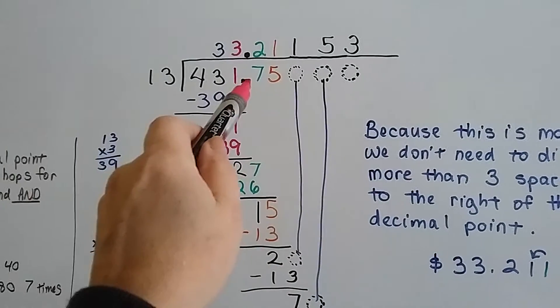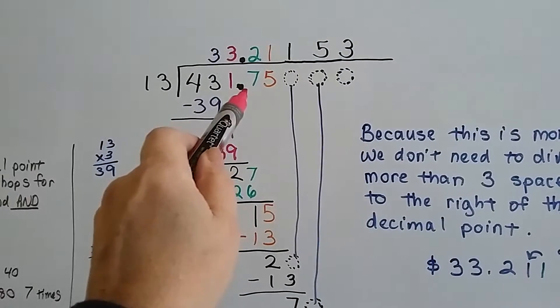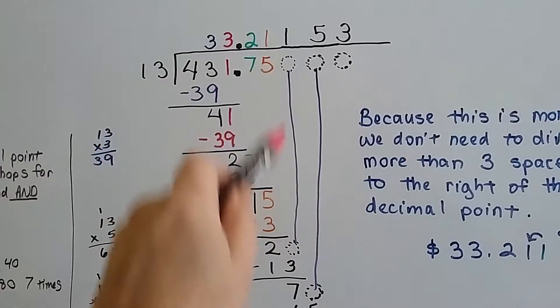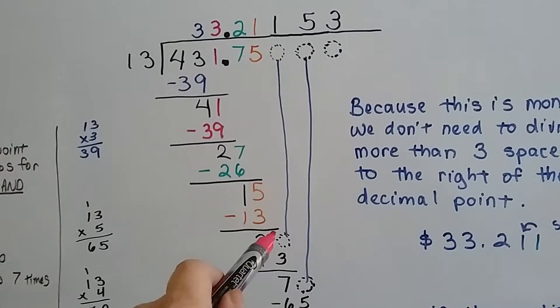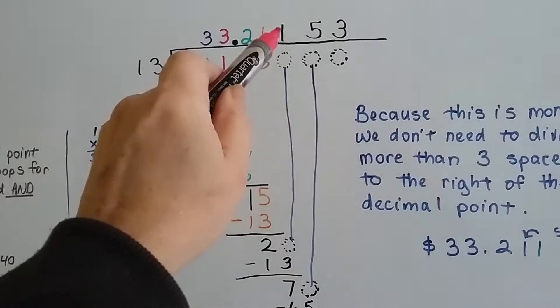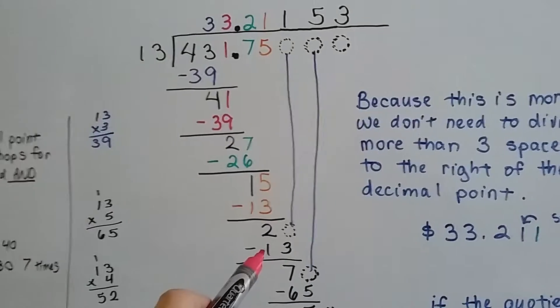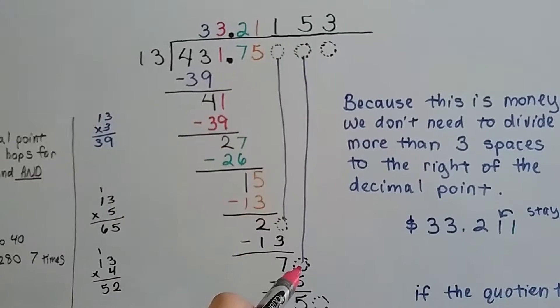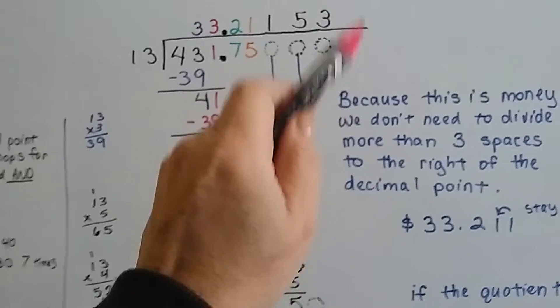But because we're going with money and we're on the right side of the decimal point, we can just keep adding zeros as placeholders and drop that 0 down. 13 goes into 20 one time. So we put our 1 up here. It equals 13. We do our subtraction. 20 take away 13 is 7. We could do it again and drop another 0 down and another one and another one.